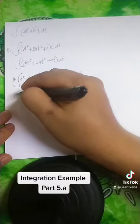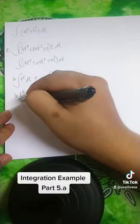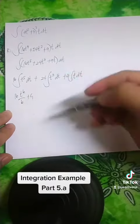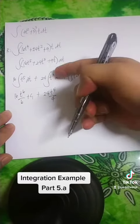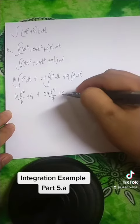Then this one is 16t to the 6th over 6 plus c sub 1, that is the first, plus 24, that is t to the 4th over 4, plus c sub 2.